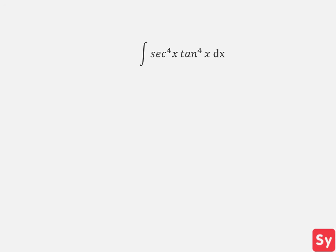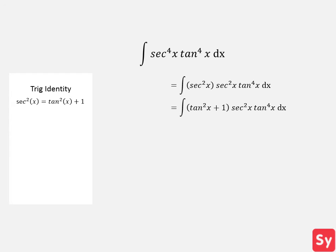Alright, next example. We have the integral of secant of x to the fourth times tangent of x to the fourth with respect to x. So first we want to pull out and save a factor of secant squared of x, and we pull that out of secant of x to the fourth. Next we use the trig identity secant squared of x equals tangent squared of x plus one, and we're going to substitute that in for the secant squared of x in the parentheses, not the one we pulled out.